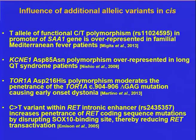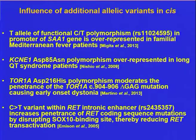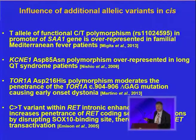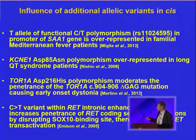There may be additional allelic influences in cis — that is, linked on the same chromosome to the mutation. There are a number of examples of linked polymorphisms which appear to moderate or modulate the penetrance of a particular disease mutation, such that the mutation may manifest more with one particular allele of a polymorphism than with the other. Those interested should access our recent review on reduced penetrance for detailed references.